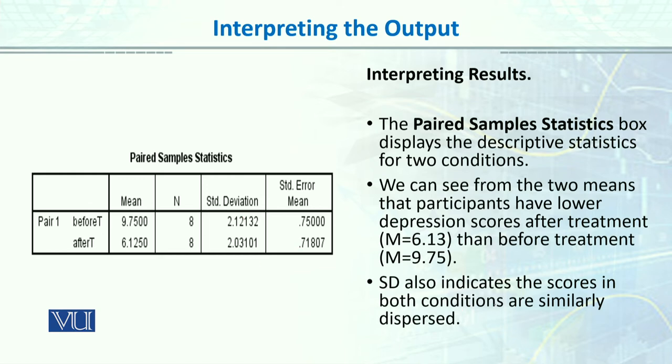We can see from the two means that participants have lower depression scores after the treatment. Before their average was 9.75, now it's 6.13, it has been decreased.